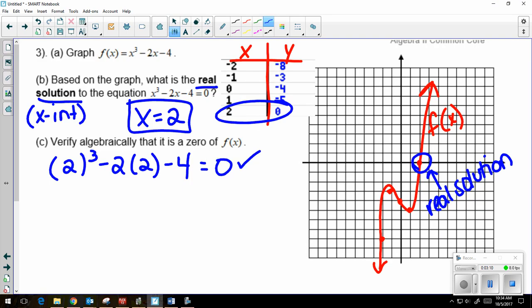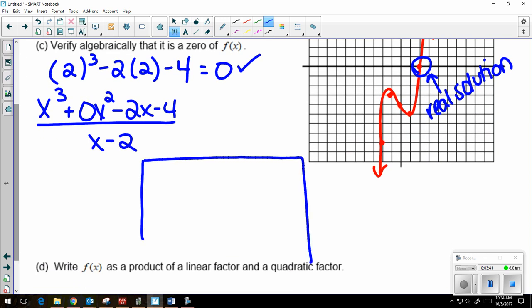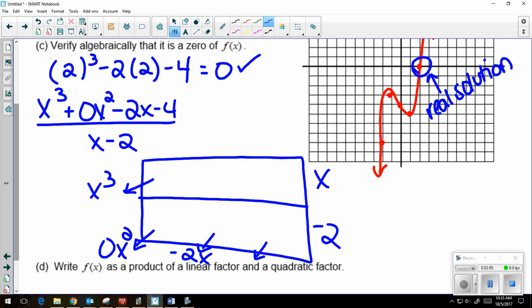But the other way that you can verify algebraically is by dividing. So I'm going to set up x cubed. I'm going to use a placeholder of 0x squared minus 2x minus 4, and I'm going to divide it by, I need a polynomial to divide it by. So right now I have x equals 2. So if it's x equals 2 as the 0, the opposite is going to be x minus 2 as the factor. So I'm going to set up tabular division. I have two rows because I have x minus 2. My diagonals are going to be x cubed, 0x squared, negative 2x, and a negative 4. Draw in my columns.